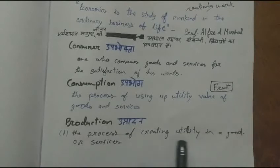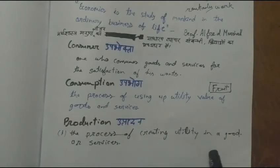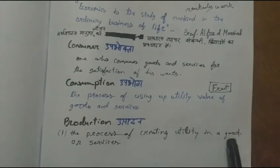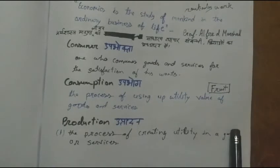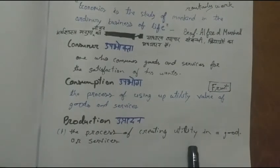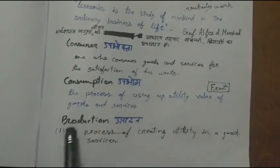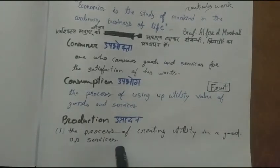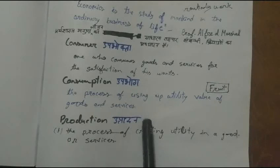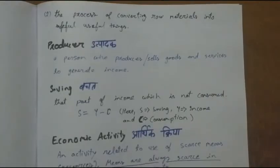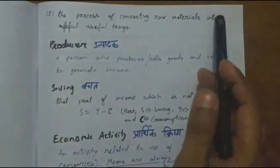If anything can be used, it means it has utility. So the process of creating utility in a good or service is known as production — that is one definition. The second definition: production is the process of converting raw material into useful things.